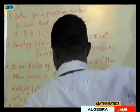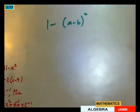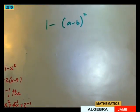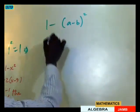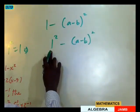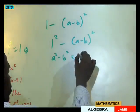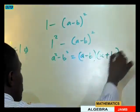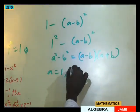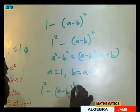Question 8 asks us to factorize 1 minus a minus b all squared. Notice this is a difference of two squares, since 1 is 1 squared. We write it as 1 squared minus a minus b all squared. Using the identity A squared minus B squared equals A minus B times A plus B, with A equal to 1 and B equal to a minus b, the factorization becomes 1 minus a minus b times 1 plus a minus b.